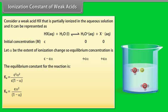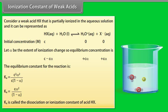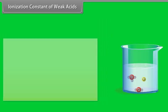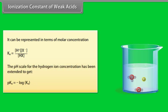The equilibrium constant Ka = C²α² / (C(1 − α)) = Cα² / (1 − α). Ka is called the dissociation or ionization constant of acid HX, and can be represented in terms of molar concentration.